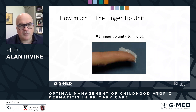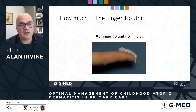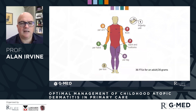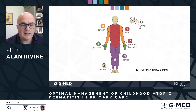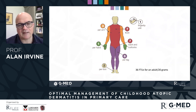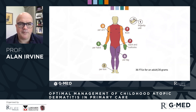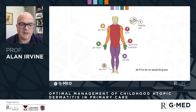A simple reminder: one fingertip unit is half a gram, and that covers two of the palms of that finger. So we know if we're measuring out these units — this is based on an adult, but we can make it pediatric appropriate as well. An adult would take 36 fingertip units, and we can break that down by age into smaller units for smaller people.